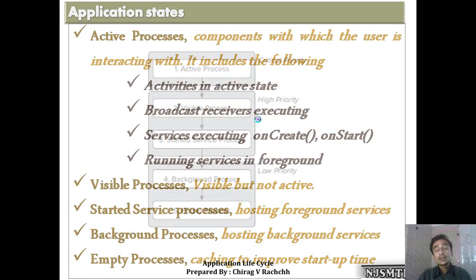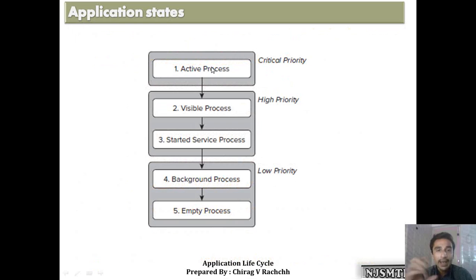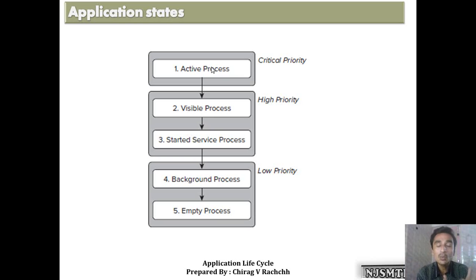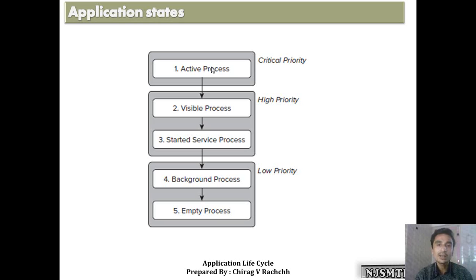Based on these different states, the priority is assigned accordingly. Active process means some component of the application is in the foreground and the client is interacting with it — so it will have the highest priority. If such an application is removed, the client would be unhappy because they are currently working and the screen would disappear. Therefore the OS will not touch it — it has critical high priority.